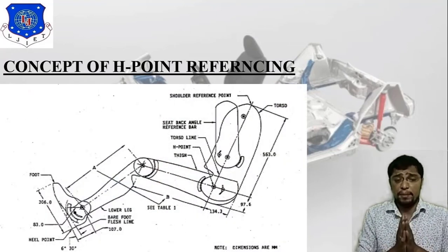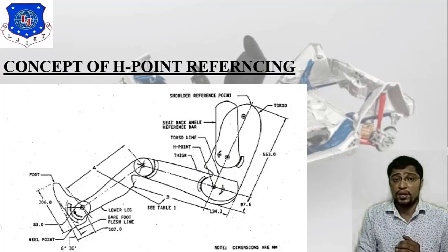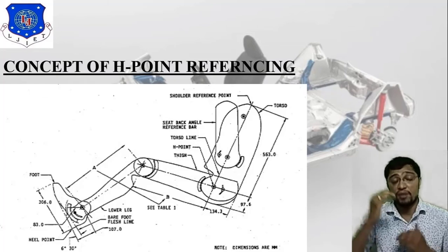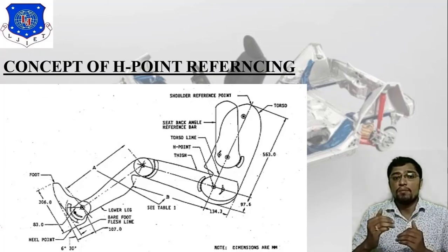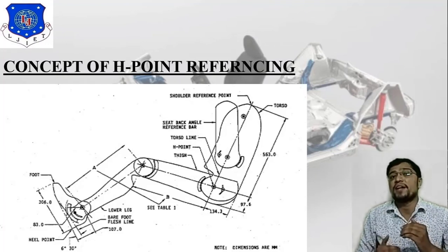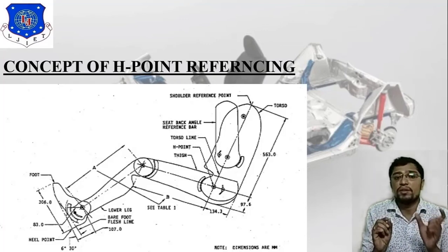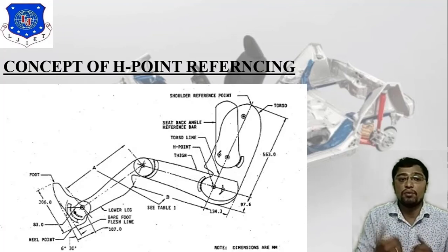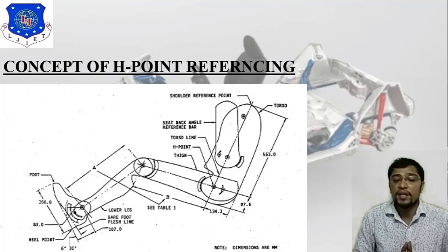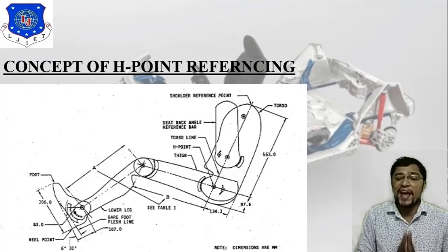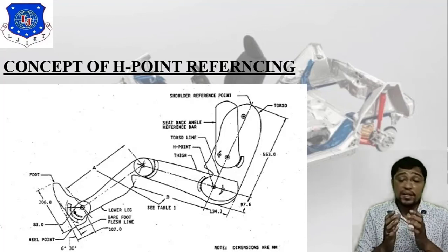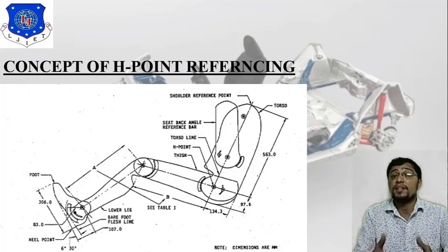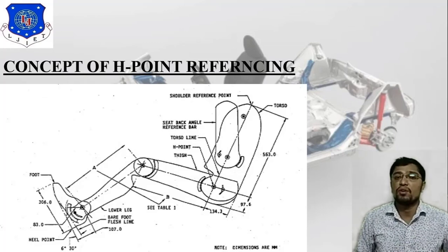An image is attached showing the edge point referencing dimensions. From the edge point (dotted point) to the upper torso portion, the distance is 563 mm. From the edge point downward, the distance is 97.6 mm. The horizontal line from the edge point is 134.3 + B mm. In the lower portion, you can find the foot, lower leg, bare foot flesh line, and heel point with their respective dimensions. All dimensions are designed as per anthropometry, which is modeled in software such as ANSYS.